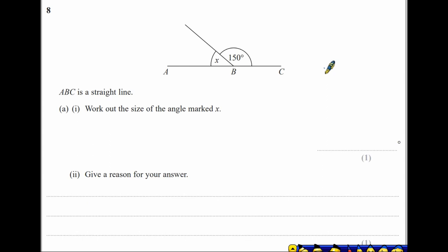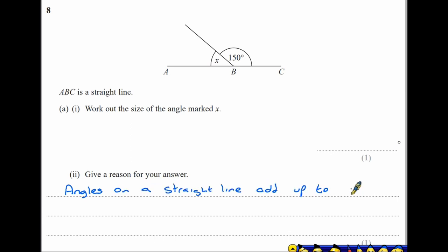Question 8A: ABC is a straight line. Work out the angle marked X and give your reason. The reason is that angles on a straight line add up to 180 degrees. Since this is a straight line, the two angles must add to 180. So we have 180 minus 150, therefore X is 30 degrees.